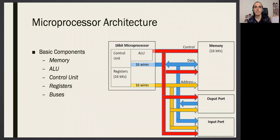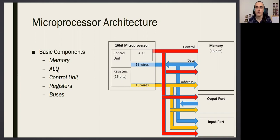Microprocessor architectures are similar for every microprocessor. You have a microprocessor in your computer, in your washing machine, and on your smartwatch. They all have these basic components: memory, the ALU which does all the computing operations, and the control unit which understands the language. The specific coding language we will be using is called assembly language, and we are going to learn that in this course.